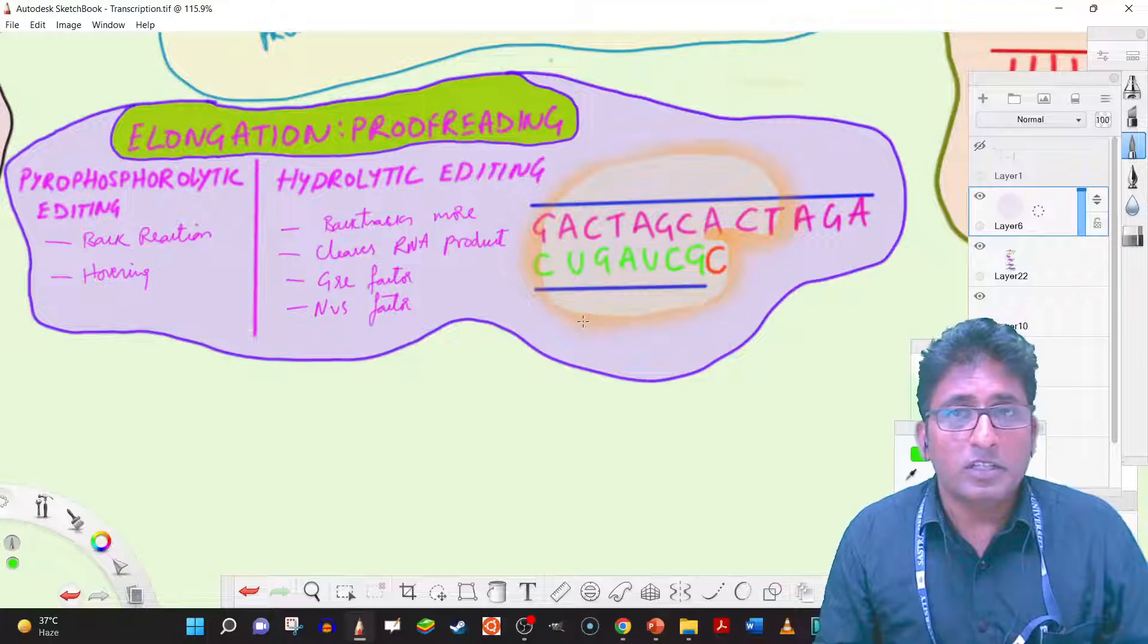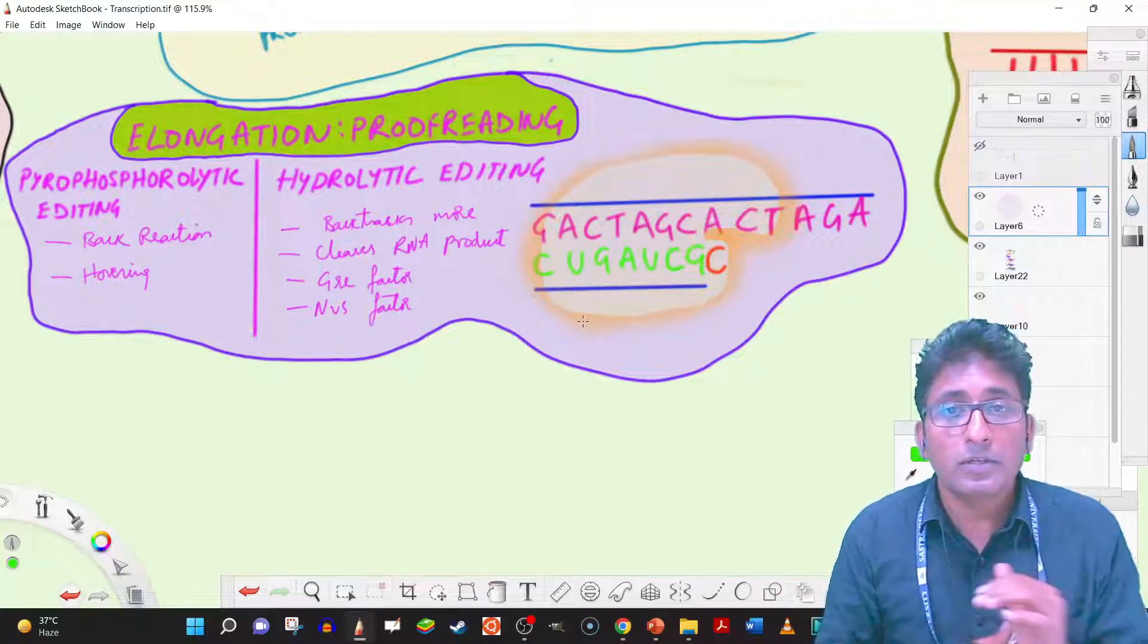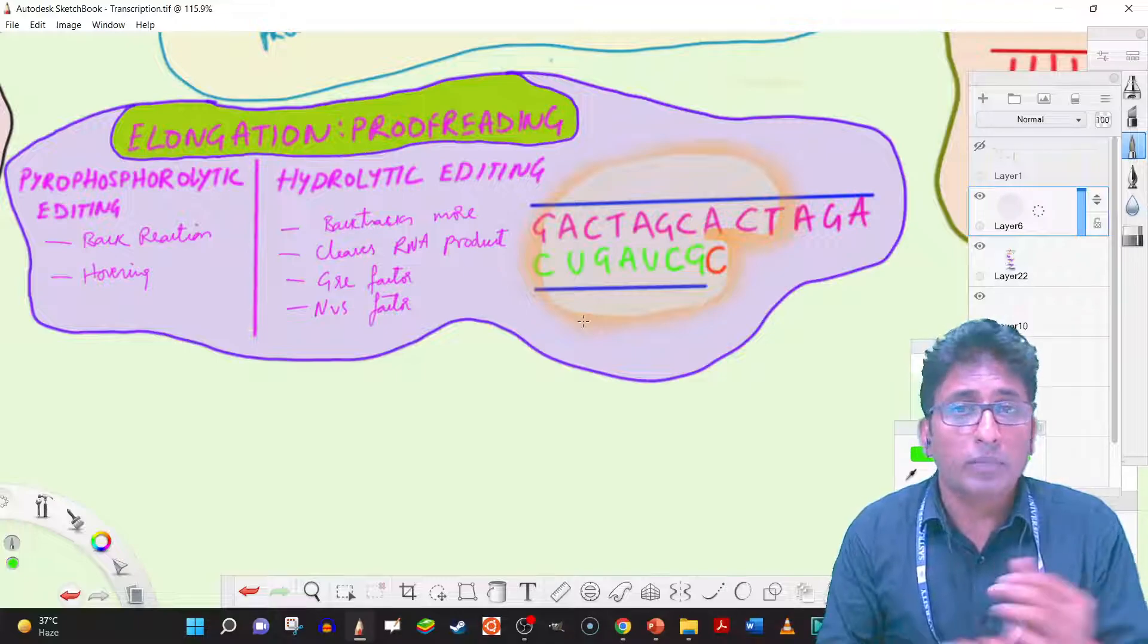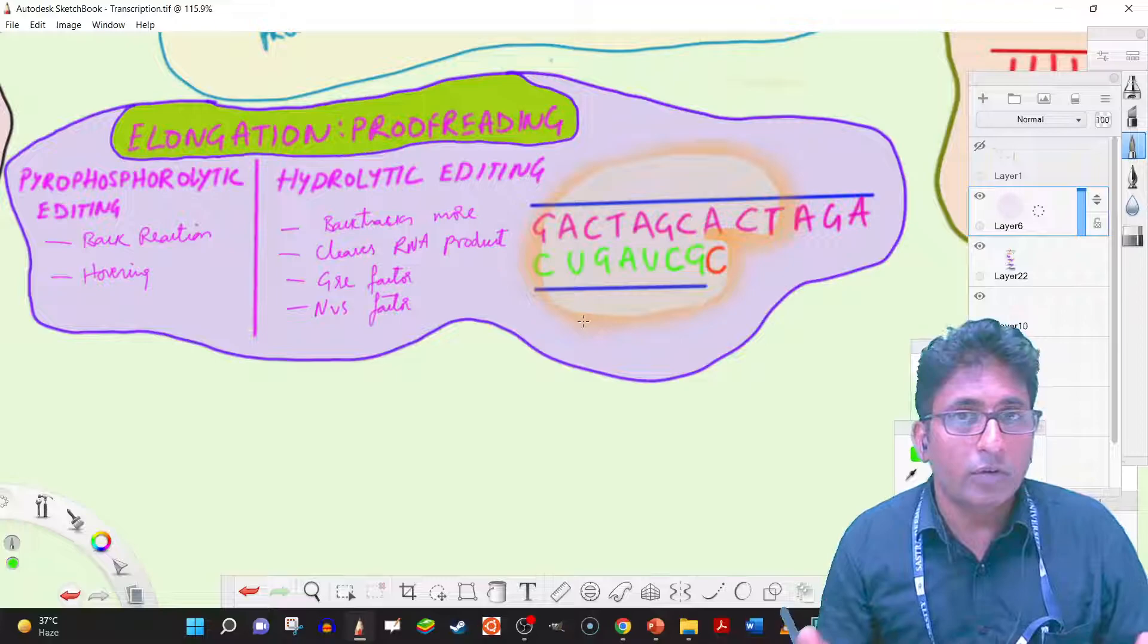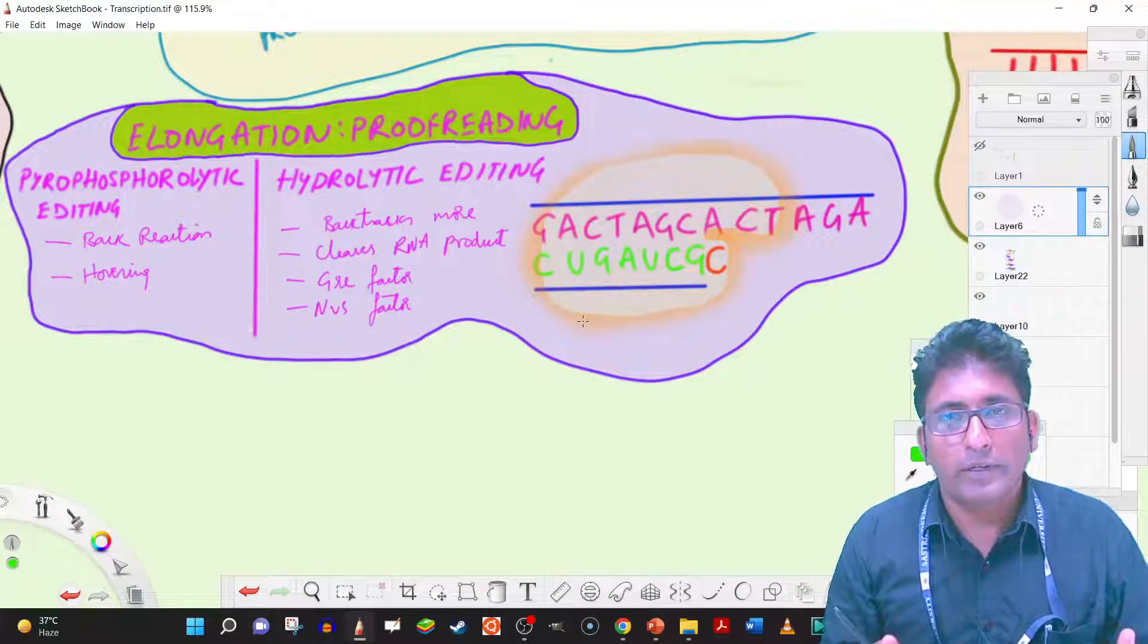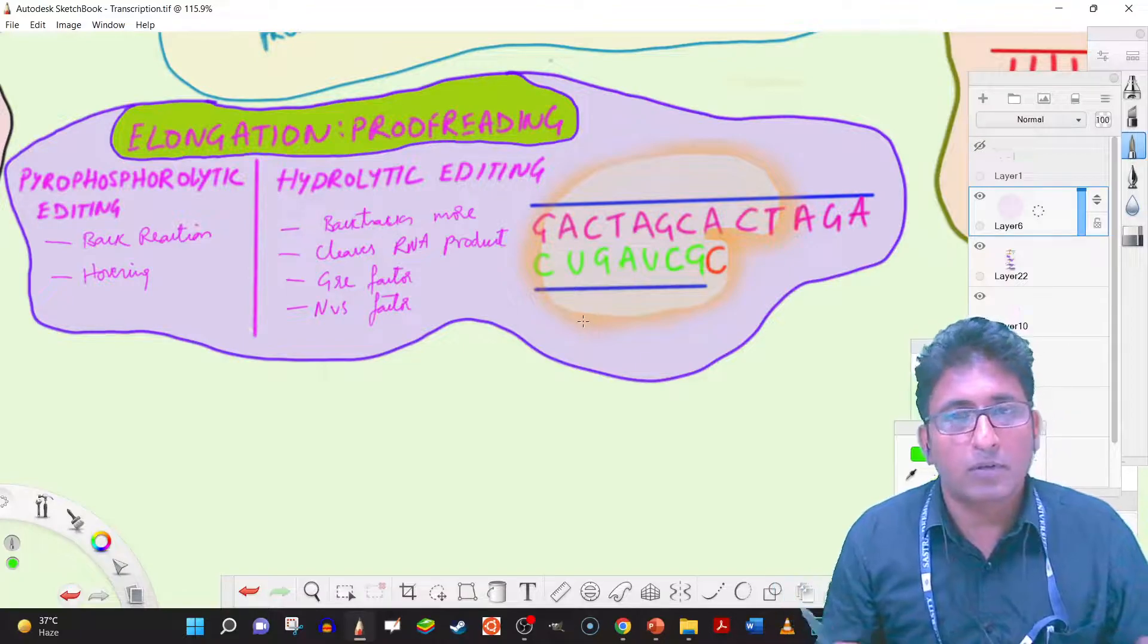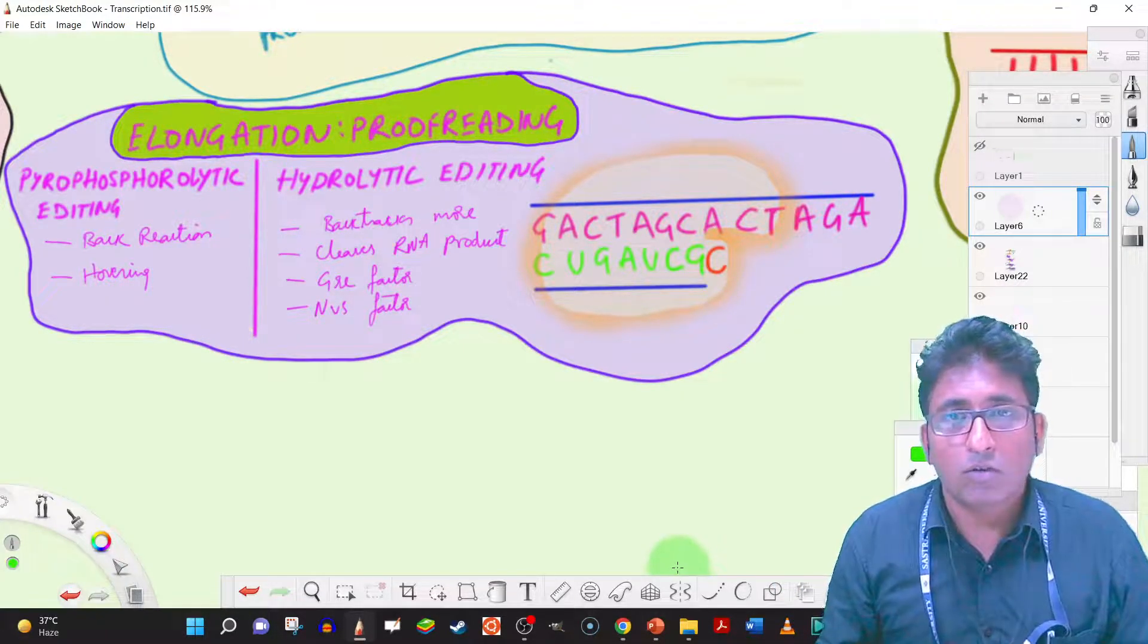RNA polymerase makes a mistake about 1 in 10,000. And actually, it could have been higher, except the error rate could have been higher, but because it has ways of proofreading, it can remove some of the wrongly introduced bases. And that is called as proofreading.